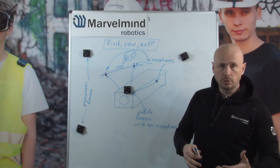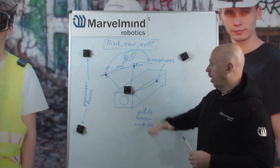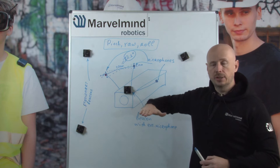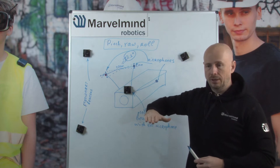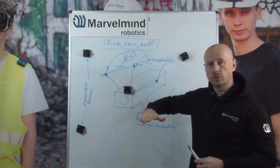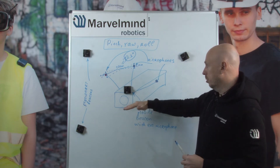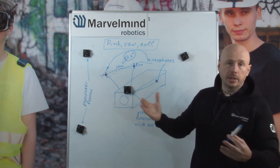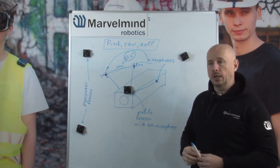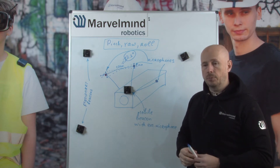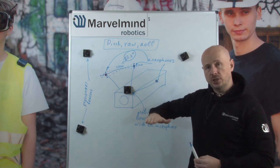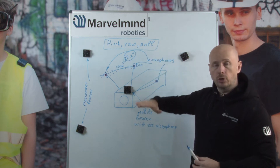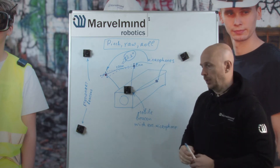So yes, it is possible to have not only the precise location of your camera or any other object, but also pitch, yaw, and roll — and very precise ones.